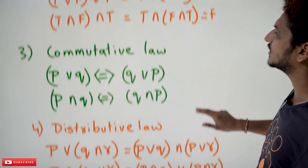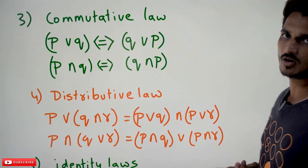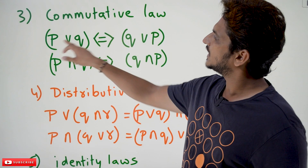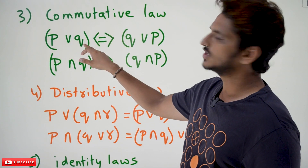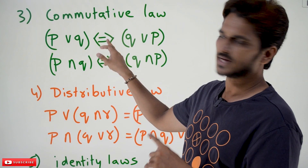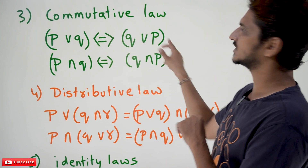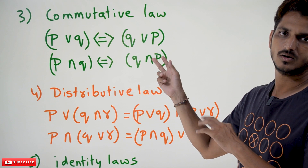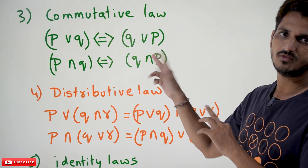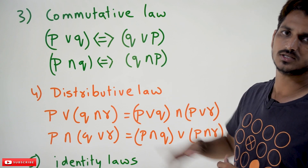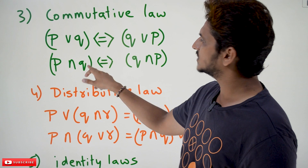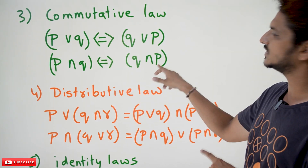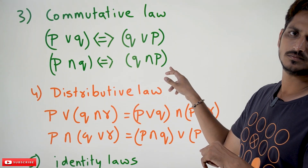Now, coming to the next one — commutative law. Commutative law means P disjunction Q is the same as Q disjunction P. You do it either way, you are going to get the same output. P conjunction Q is equal to Q conjunction P.